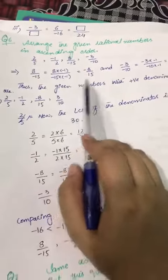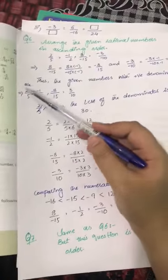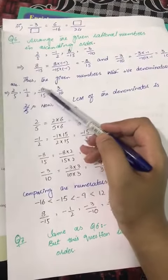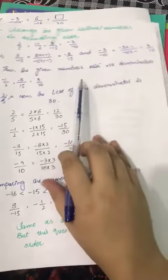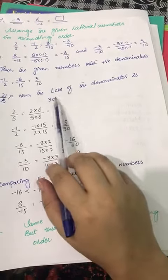So thus the given numbers with positive denominator are 2 by 5, minus 1 by 2, minus 8 by 15, and 3 by 10. Now the LCM of the denominators is 30.